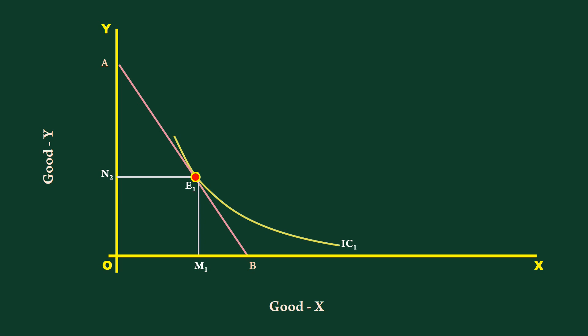The income of the consumer and price of good Y remaining constant, there is a fall in the price of good X.